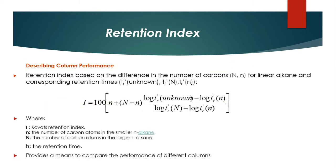The retention index is based on the difference in the number of carbons (n) for a linear alkane and corresponding retention times (tr). In the Kovats Retention Index formula: i is the retention index, n is the number of carbon atoms in the smaller n-alkane, N is the number of carbon atoms in the larger n-alkane, and tr is the retention time. This provides a means to compare the performance of different columns.